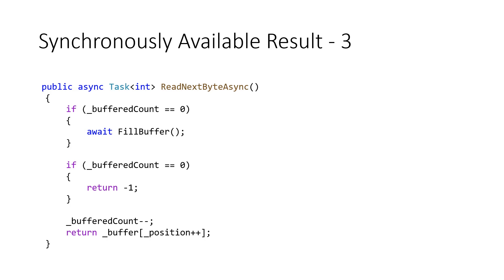If we wanted to cache all possible integer results, we would need maybe terabytes of memory, which is insane. So most of the time we are returning a task where we don't know the result, and if FillBuffer is called we have to create a new task every time. That means a lot of memory allocations and garbage collections — this is not good.